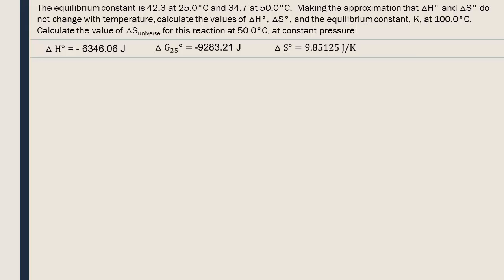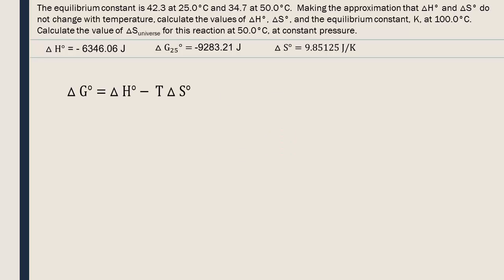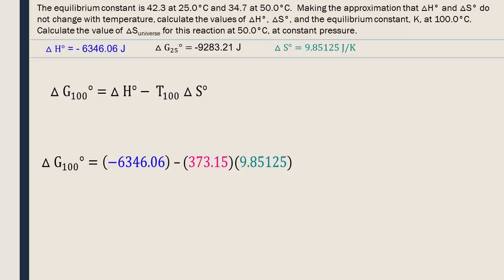To find the equilibrium constant at 100 degrees Celsius, we will use the following formula. However, we only know standard delta G at 25 degrees Celsius, not 100 degrees Celsius. The question told us that standard delta H and S don't change, but standard delta G does change with temperature. So we need to find standard delta G at 100 degrees Celsius first, using the same free enthalpy equation as before. We put in our values for delta H and delta S that we already calculated. The standard free energy value is negative 10,022.05 joules.